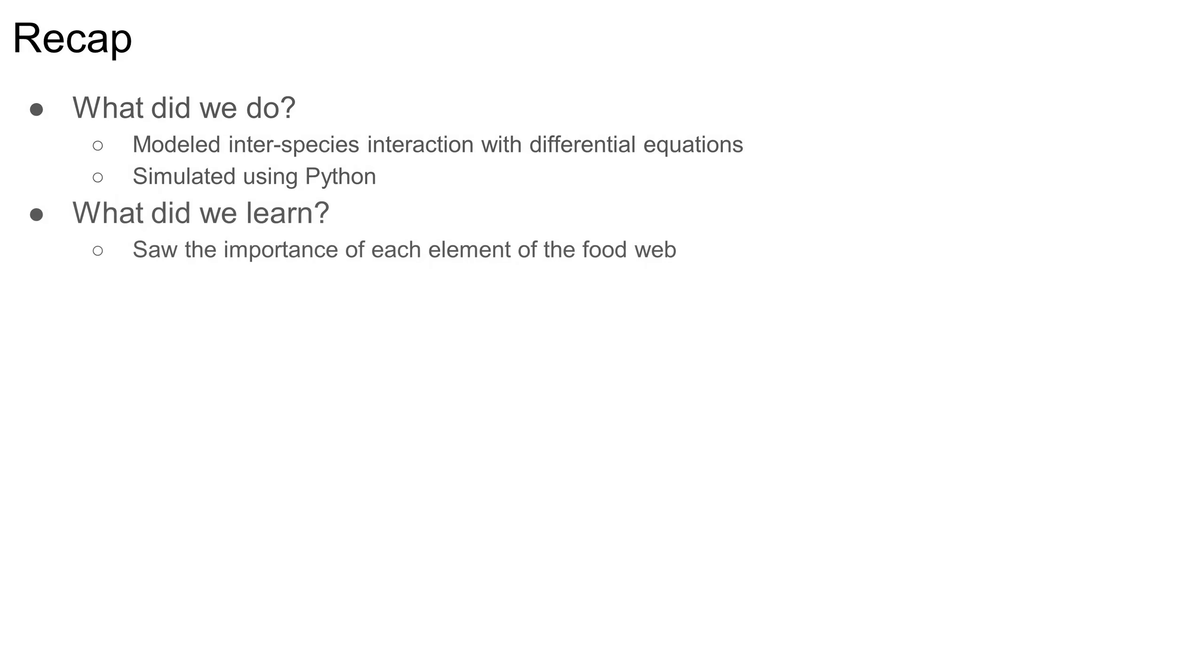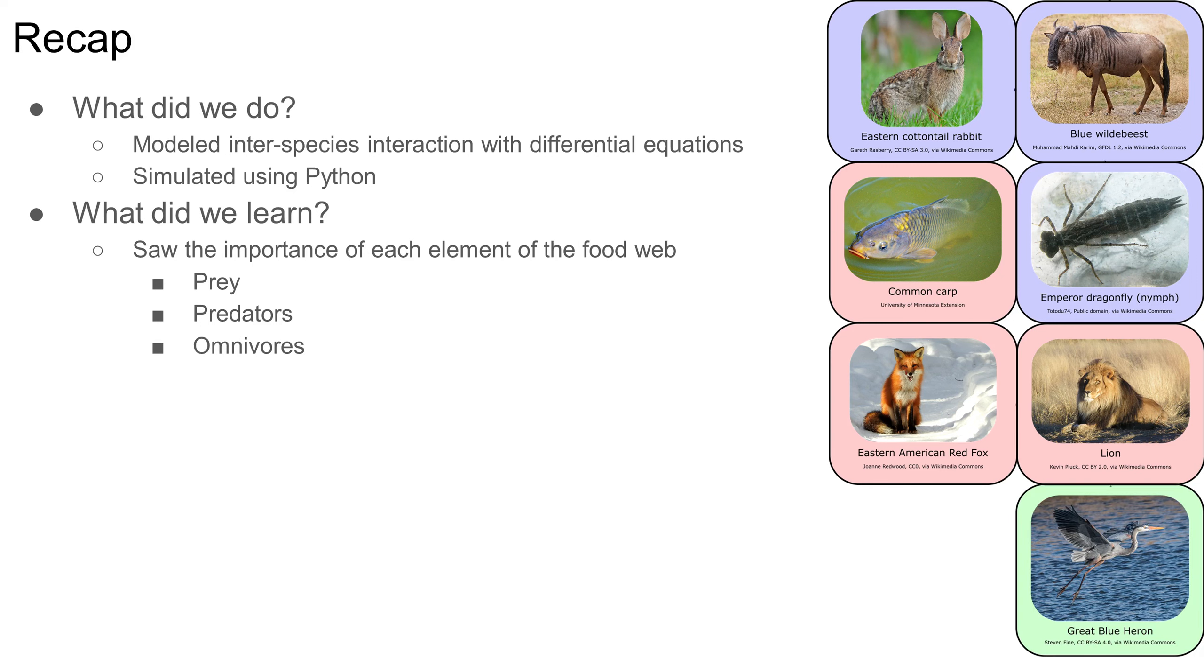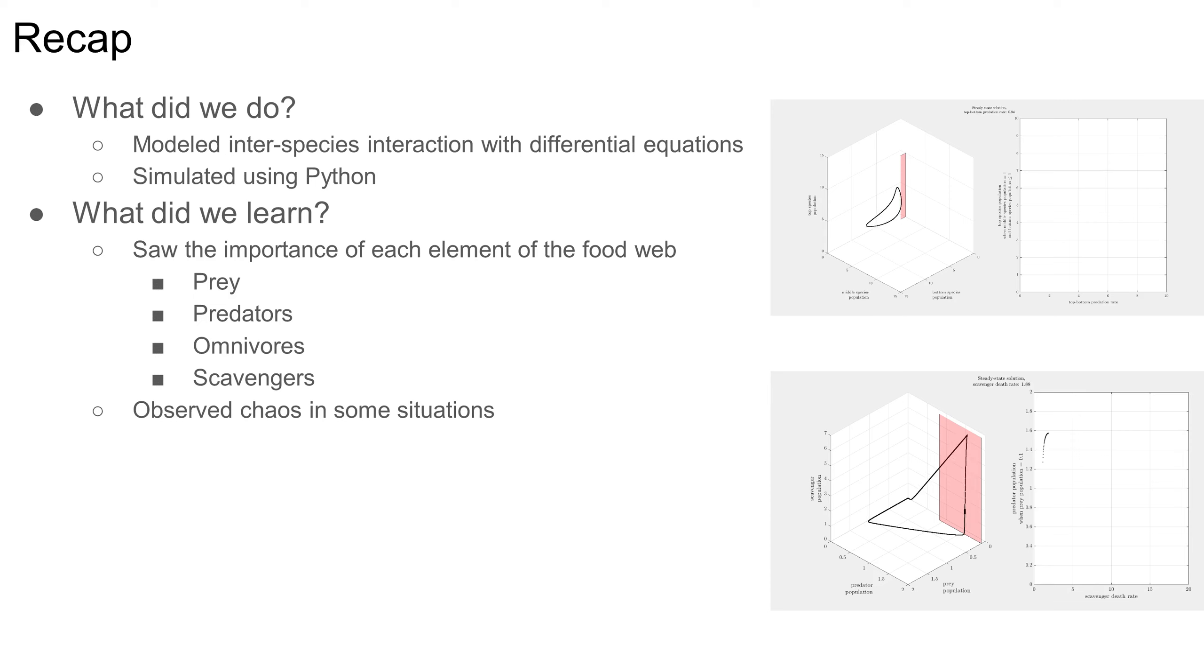Let's recap what we did in this video. We modeled different kinds of interspecies interaction with differential equations, and we used Python to simulate these models. We saw the importance of each species to its food web, including prey, predators, omnivores, and scavengers. We also saw that, at least under certain conditions, chaos can arise in food webs consisting of three or more species, demonstrating that, indeed, some simple systems are capable of surprisingly complex behavior. We also discussed some of the implications of all this as it relates to uncertainty mitigation and to responsible stewardship.